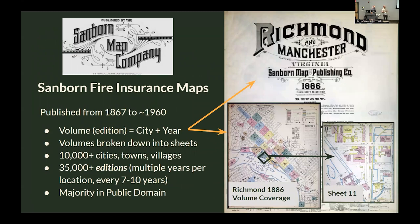Sanborn fire insurance maps — many of you are probably familiar. They are from the mid-1800s to the 1900s, created for fire insurance companies, so they have all the information you would want: building materials, building use. The vast majority of them are in the public domain, which was a nice thing about using the Library of Congress collection because they had checked that before scanning.